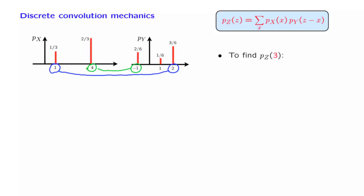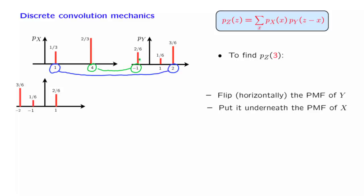However, keeping track of these correspondences here can become a little complicated if we have richer PMFs. So an alternative way of arranging the calculation is the following. Let us take the PMF of y, flip it along this vertical axis, so these two terms will go to the left side and this term will go to the right hand side. And then draw it underneath the PMF of x. This is what we obtain.